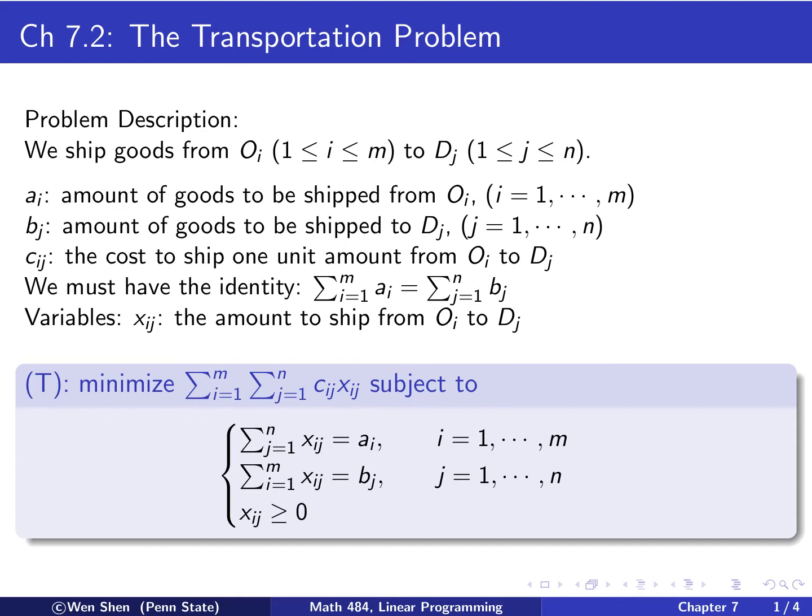Minimize total cost subject to all the constraints that the problem is imposing. So the constraints are the following. If I sum over J for a fixed I, this gives the amount shipped from OI, which must exactly equal AI. If I sum over I for a fixed J, this is the total amount shipped to DJ, which must equal BJ. These are two equality sign constraints, so I will have M plus N total constraints. And all the variables are restricted. For M and N large, this can be a huge system of constraints.